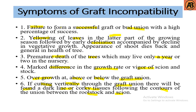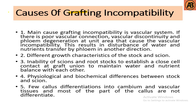There are some causes of graft incompatibility. The main cause is the vascular system — poor vascular connection, vascular discontinuity, and phloem degeneration at the union area cause vascular incompatibility. Other causes include different growth characteristics of rootstock and scion, inability of scion and rootstock to establish close cell contact at the graft union to maintain water and nutrient balance, physiological and biochemical differences between rootstock and scion, and few callus differentiation into cambium and vascular tissues.